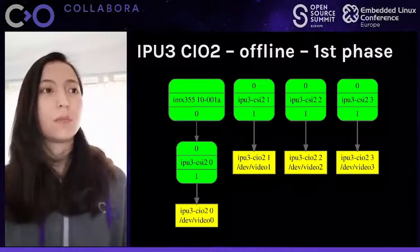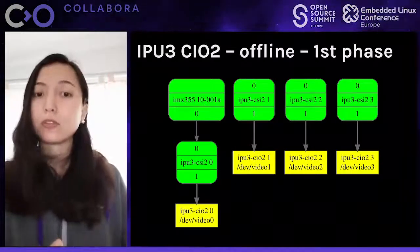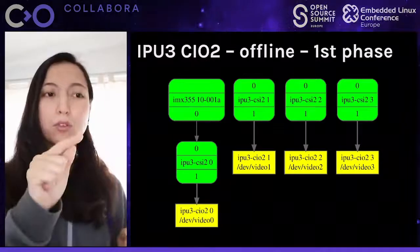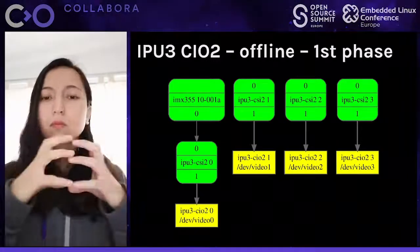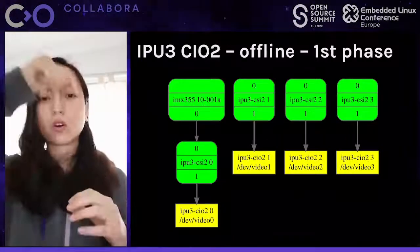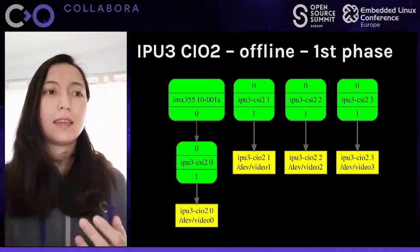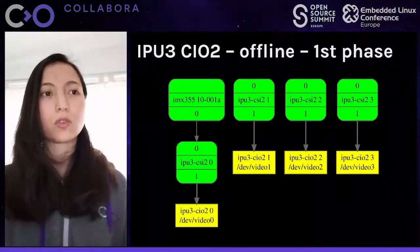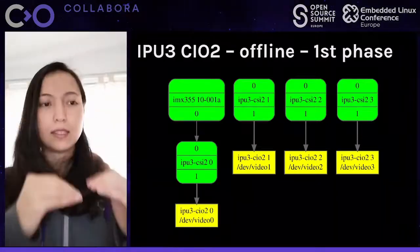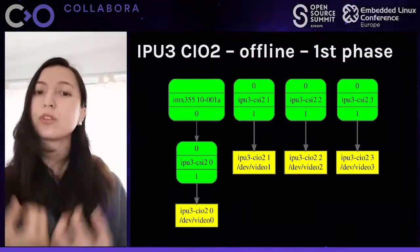This is the topology of the IPU3-CIO2 driver, the camera interface that performs the first phase of the offline ISP. We can see four IPU3-CIO2 sub-device blocks, meaning we have four buses and can retrieve images from four sensors simultaneously. In this case, we only have a single sensor, the IMX355, connected to the first block. The yellow blocks are where user space interacts — in this case /dev/video0 — to retrieve images from the kernel.